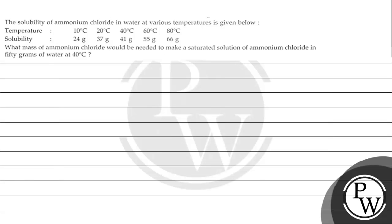Hello, let's read this question. The question says the solubility of ammonium chloride in water at various temperatures is given — 10°C, 20°C, 40°C, 60°C, and 80°C. What mass of ammonium chloride would be needed to make a saturated solution in 50 grams of water at 40°C?